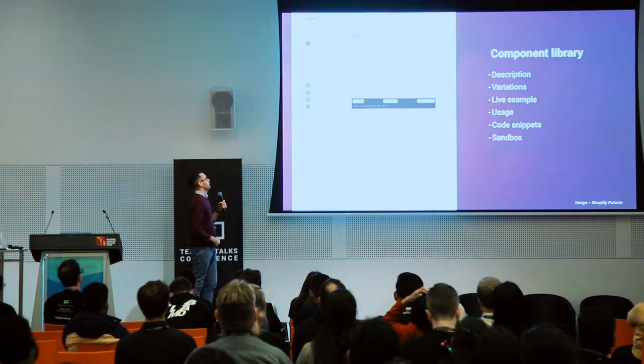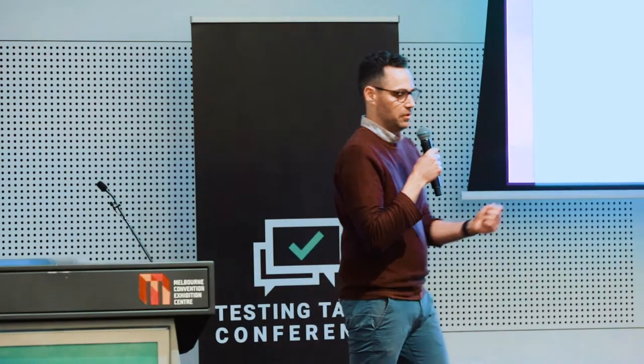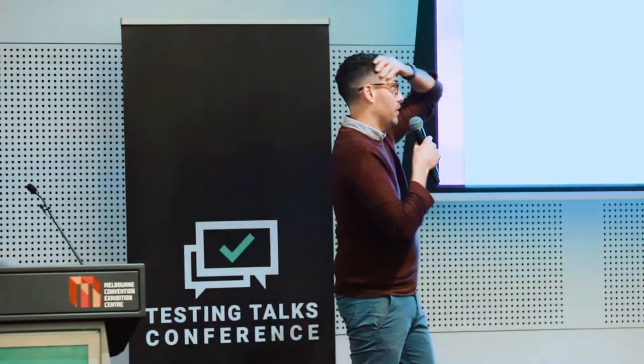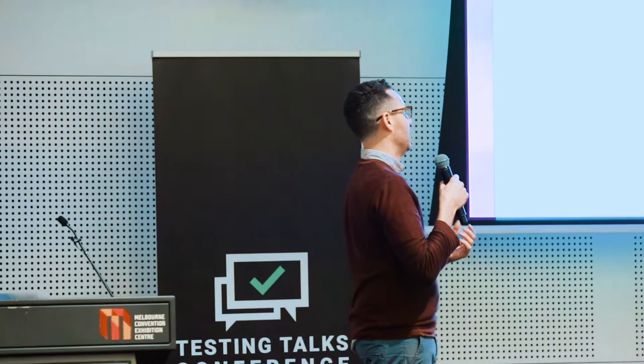Then you've got the component library — all the components across your whole organisation and all your products, all listed out. Each component is given a title, a description, and all the different variations — a large button, a small button, a button with an icon. You get a live example of how it looks in your products, guidance on how to use it and how not to use it, code snippets for developers to copy and paste, and a sandbox where devs can play around. It actually becomes a really good tool for development but also for testing against.